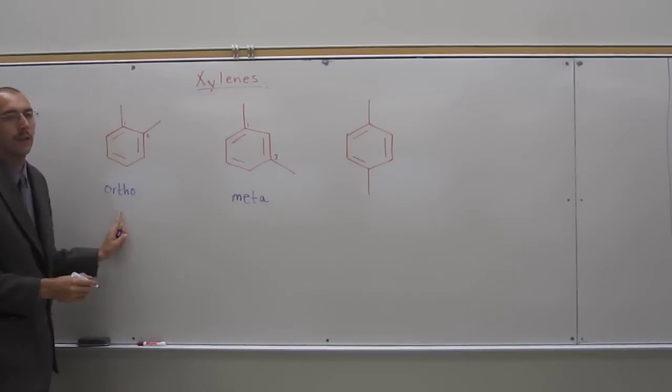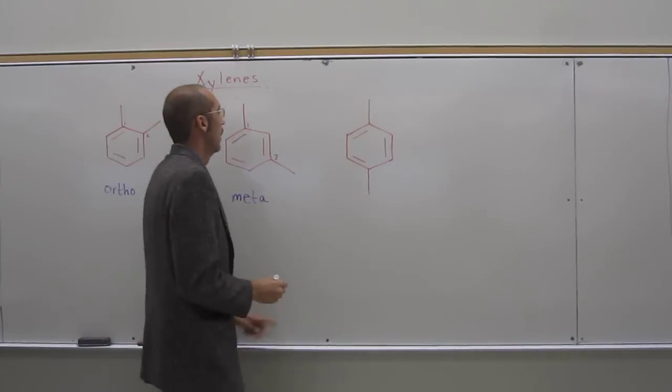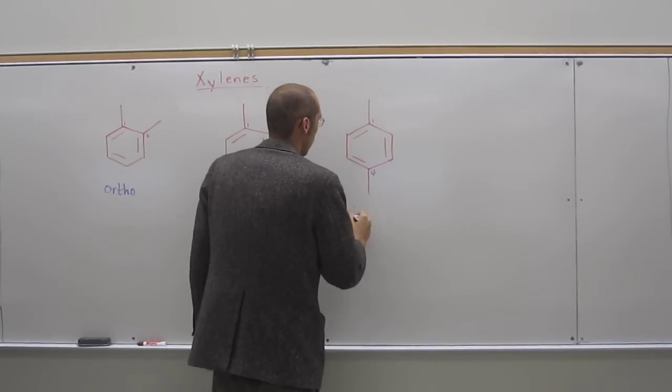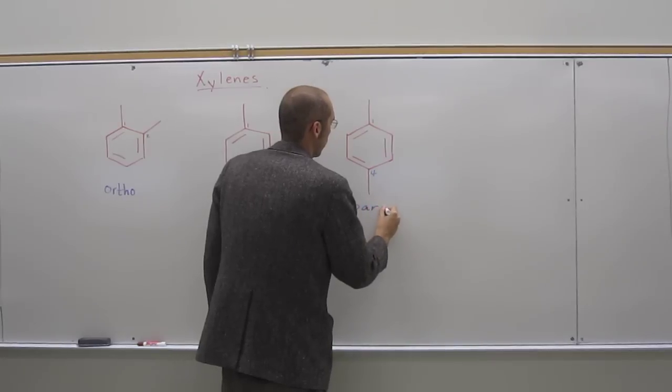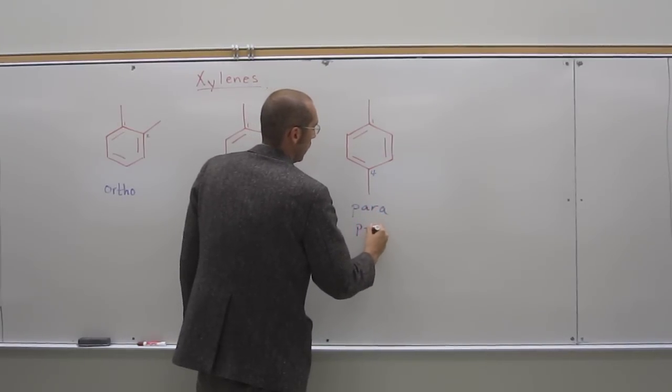You could also call this o xylene or m xylene. And then if you've got them across from each other or in the one, four position, you call that para. So you could call it para xylene or p xylene.